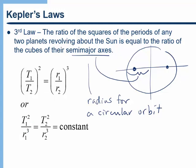Now again, Kepler didn't have any idea why these laws were true. But when Newton came along, he was able to derive Kepler's third law. And we're going to do it for the special case of circular orbits.